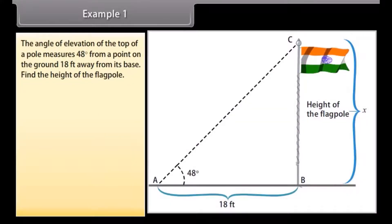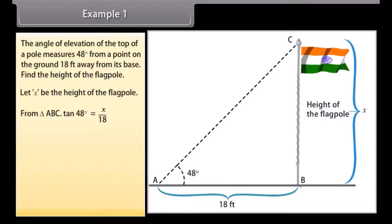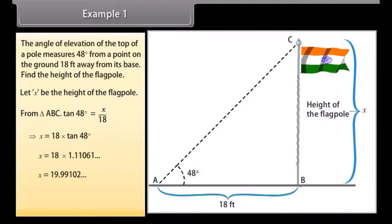Let's solve some examples to understand better about angle of elevation and depression. The angle of elevation of the top of a pole measures 48 degrees from a point on the ground 18 feet away from its base. Find the height of the flagpole. Let x be the height of the flagpole. From triangle ABC, tan 48° = x / 18, which implies x = 18 × tan 48° = 18 × 1.11061 = 19.991 ≈ 20. So, the flagpole is about 20 feet high.